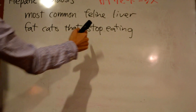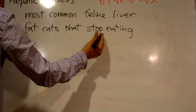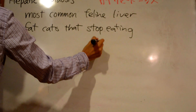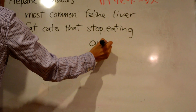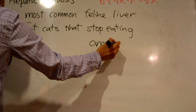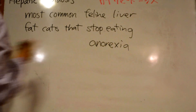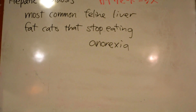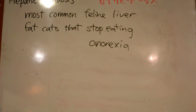Initial anorexia — the stop eating part — may be secondary to a diet change or another stressor, such as moving, boarding, the introduction of a baby, or a new pet to the household.